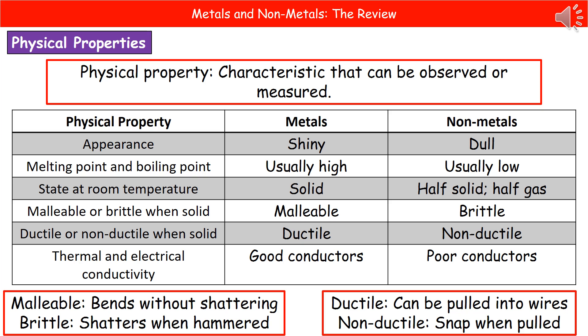If we consider whether they're malleable or brittle when solid, metals are malleable, which means you can bend them without them shattering, whereas non-metals are brittle, so if you hammer on them they're going to shatter.